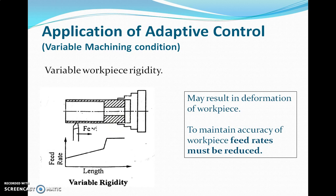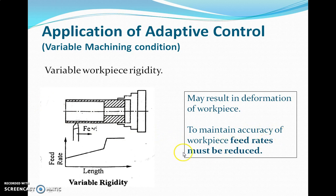The third condition is variable workpiece rigidity. As shown in the figure, a workpiece with thin sections has very little material and may not be well-mounted. Machining over such sections with excessive forces can cause the workpiece to bend, resulting in deflection, deformation, and rejection of the part. To maintain accuracy, feed rates must be reduced for thin-section workpieces, and the adaptive control system should recognize when deflection is approaching a limit and reduce the feed rates accordingly.